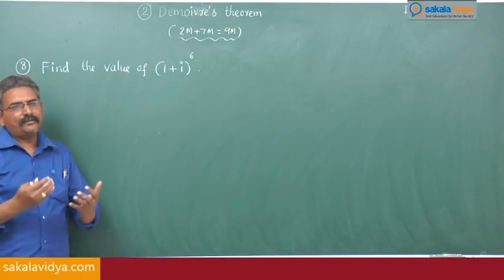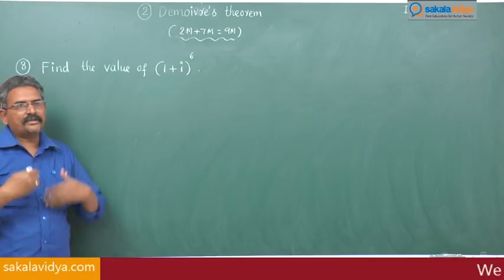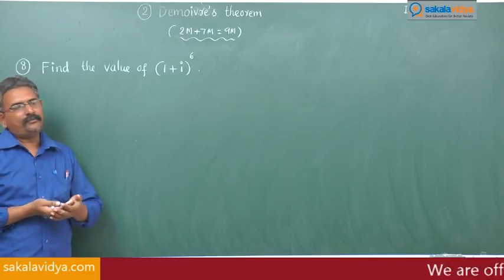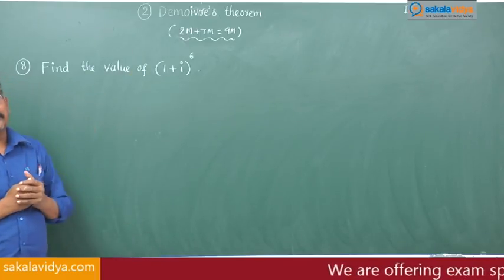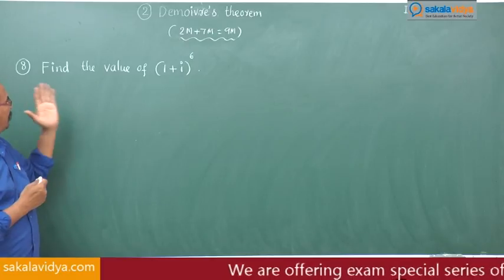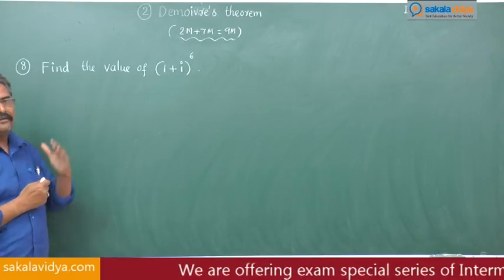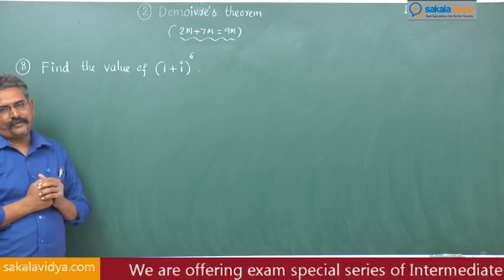Polar form means the cos θ + i sin θ form, so that De Moivre's theorem can be applied and we can simplify the given problem.